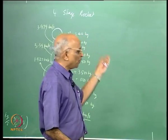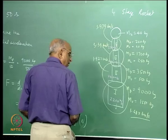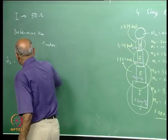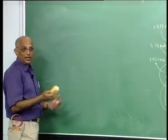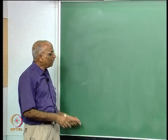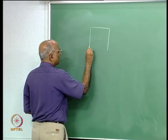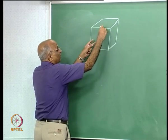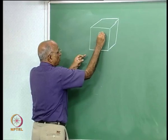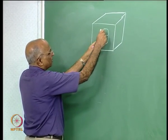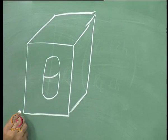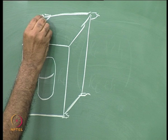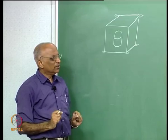Let us do one more problem — this time relating to a satellite. A satellite carries propellant, and when the propellant is exhausted, the satellite's useful life is over. Let me take the example of INSAT. The satellite consists of a box-like structure, propellant tanks, a series of about 16 rockets at the edges for attitude control, solar panels, and antennas.